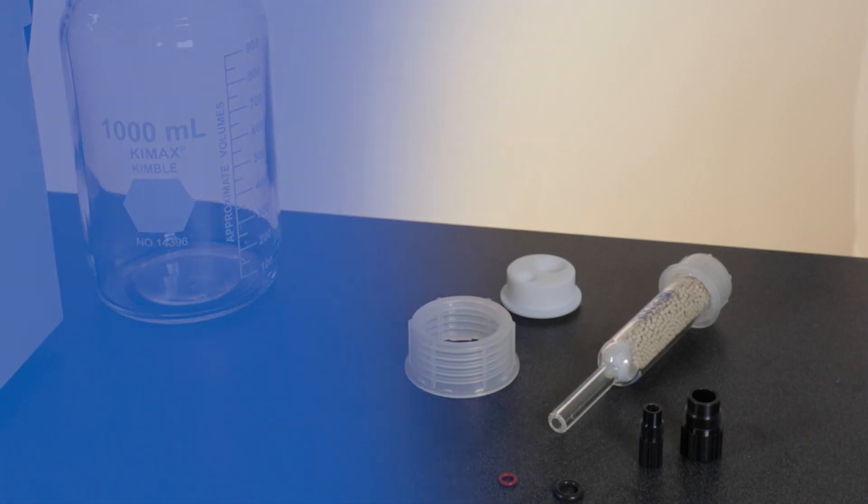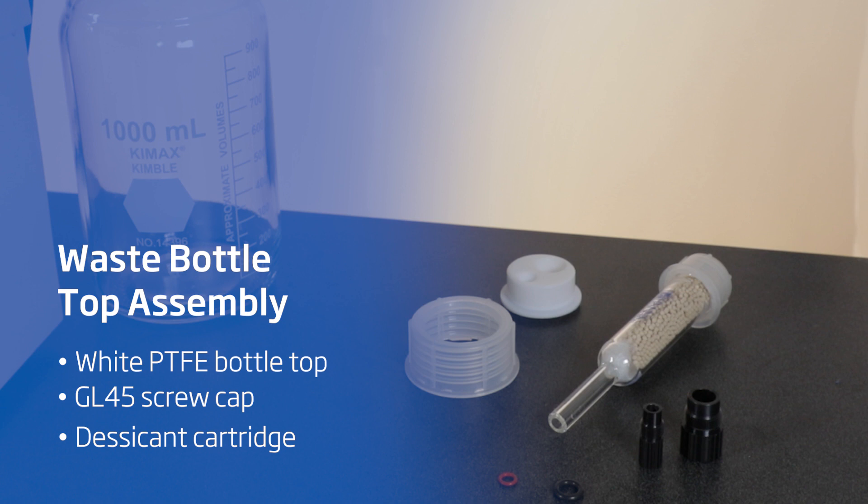For the waste bottle assembly, we'll need a white PTFE bottle top, GL45 bottle screw caps, and a desiccant cartridge with hose barbed caps.